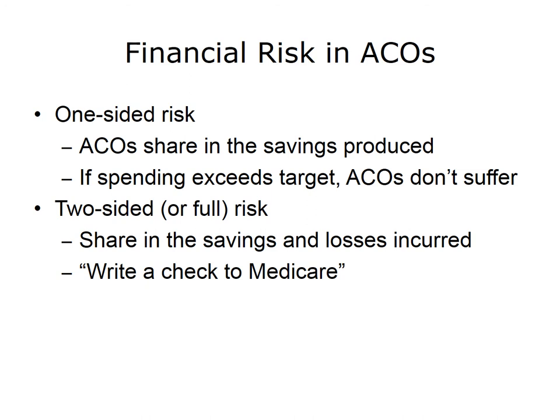The various ACO programs and models are organized to put different levels of risk on the ACO. Most typically, the arrangement is one-sided, meaning ACOs share in the savings produced but not potential losses. In this case, they receive additional payments from Medicare to reflect the savings achieved. If spending does not exceed the target, ACOs are not at risk for the difference. The more advanced ACO programs include two-sided or full financial risk — if spending targets are not met, the ACO must share in the financial loss incurred. Some ACO executives describe this as writing a check to Medicare. Many providers are not experienced in taking on this level of financial risk.